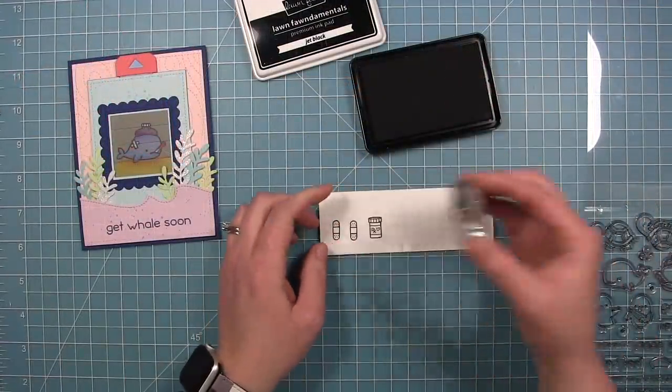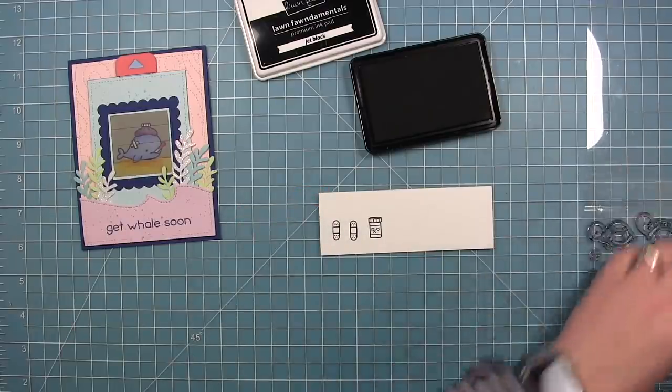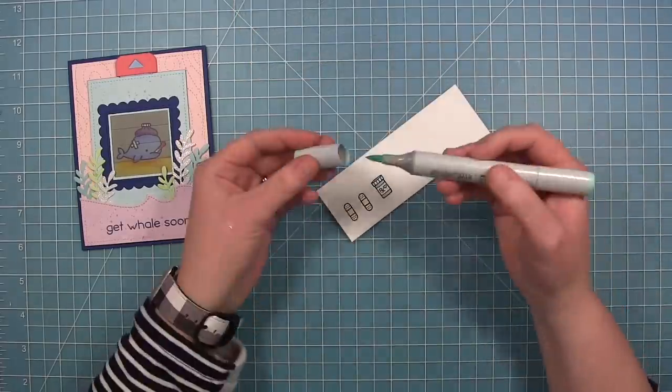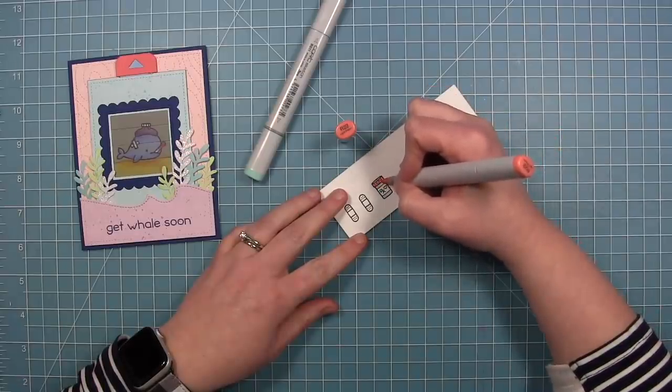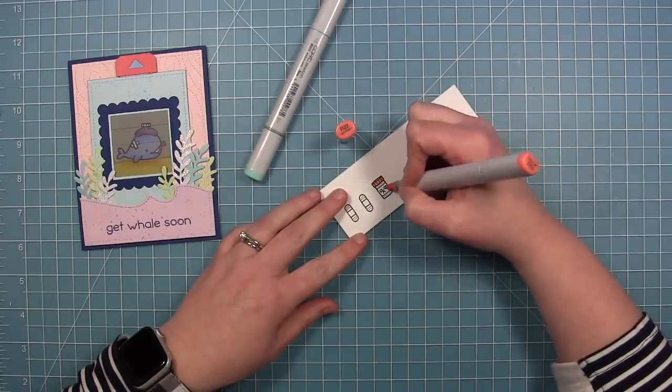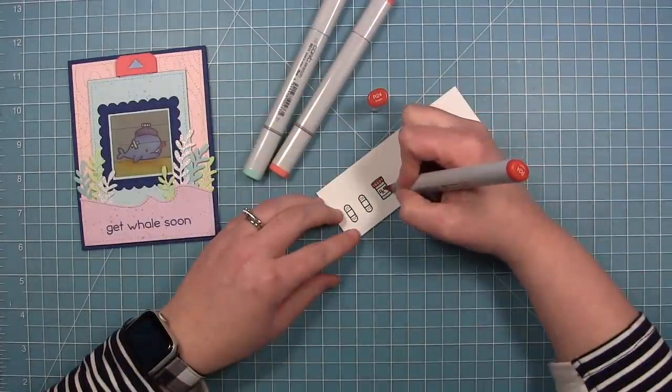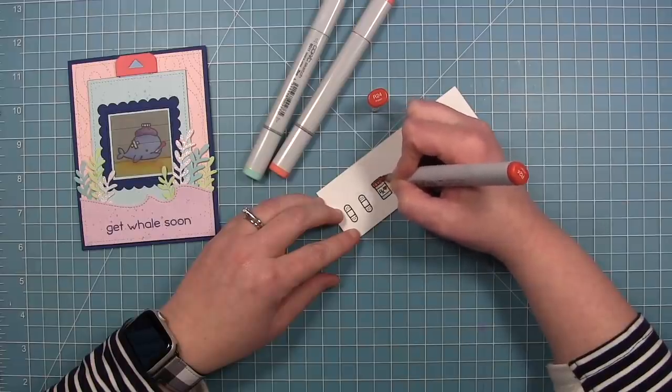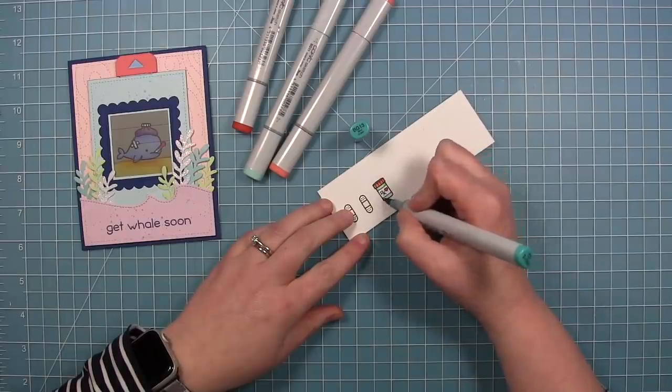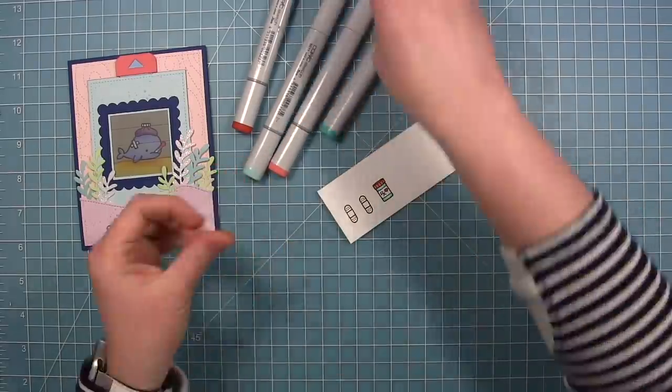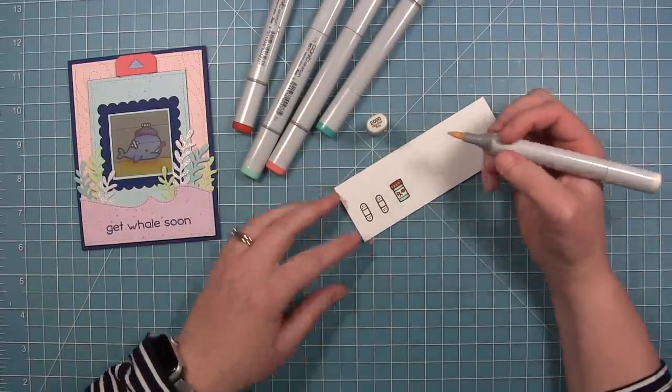I also thought it would be fun to embellish with some of the small pictures in this set. So I've stamped out the band-aids and also the prescription bottle and I'm just going to color those with Copics. Just some basic coloring, not a whole lot of shading. And bringing in some of the colors that I already have going on in the card. So I've got that pink tab at the top. That's why I use some pink on the bottle. And you'll see here in a little bit I'm also going to pull in some pink die cut hearts in the same color to help bring that pink in.